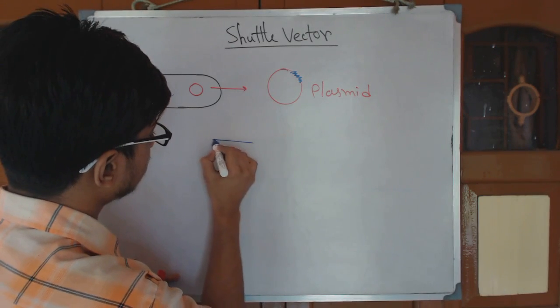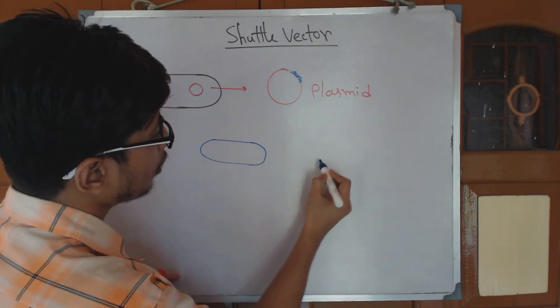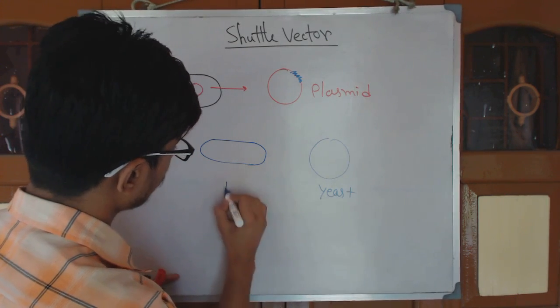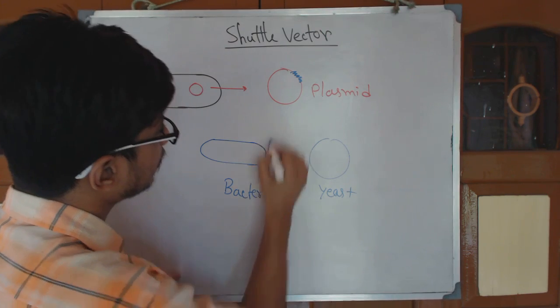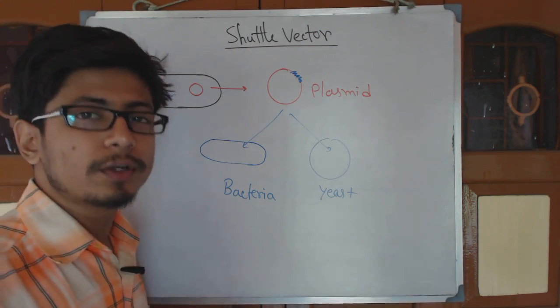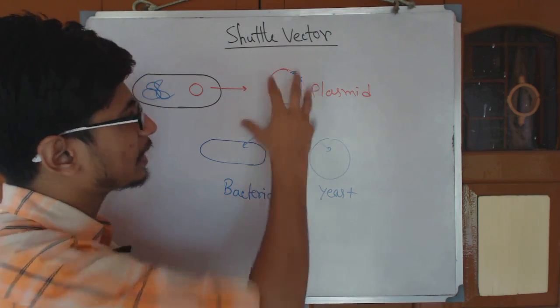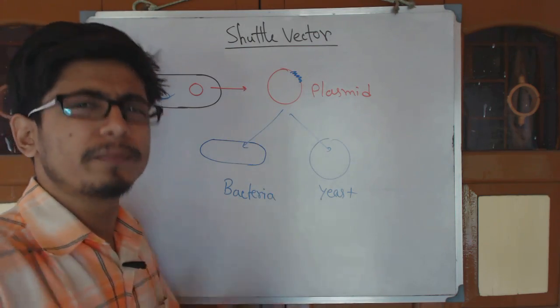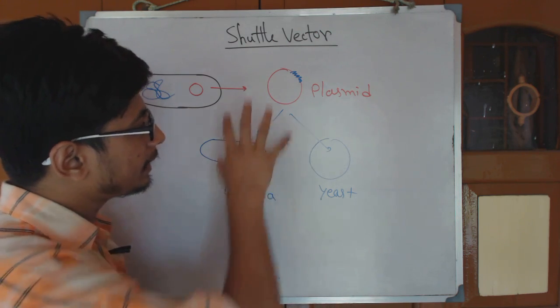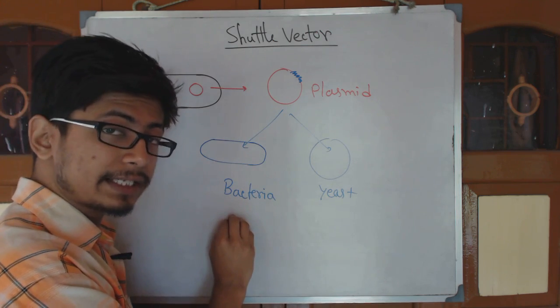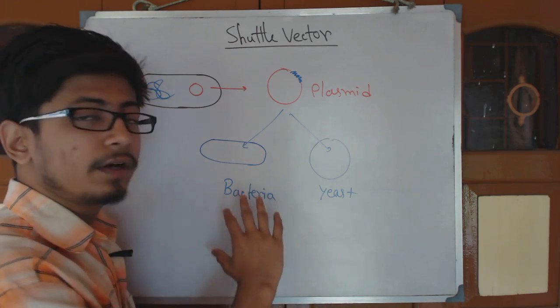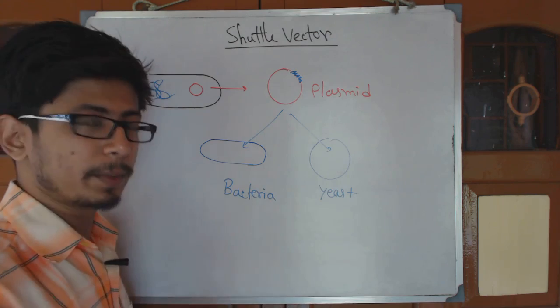The host is either a bacterial cell or a yeast cell. So this is for the normal type of vectors. Vectors can be of different types like plasmids or many different varieties but for now we focus on plasmid. Either it could be inserted into a bacteria as a host or inside yeast as a host. Now the type of vectors are varied for this different purpose.